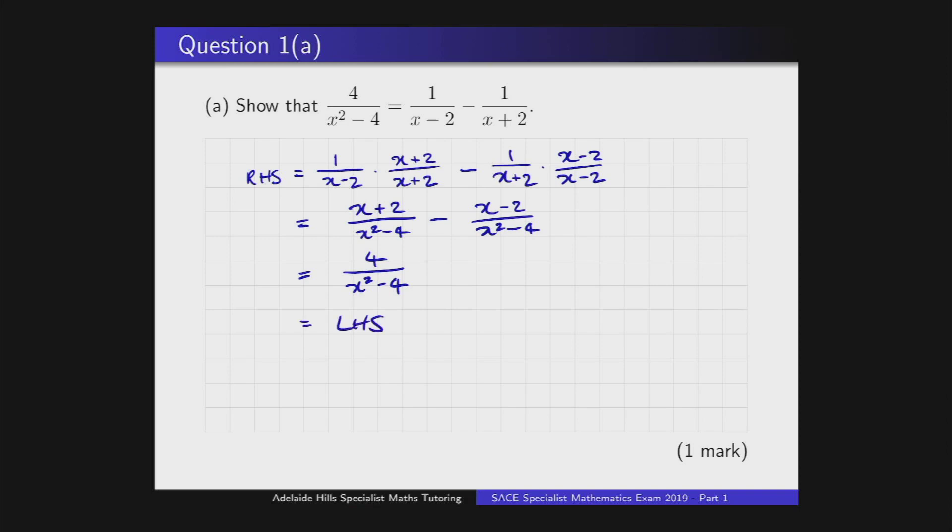So this is what we needed to show, and we can just comment that that's equal to the left-hand side. That's all we need to do to finish that question. We've shown that 4 over x squared minus 4 is equal to 1 over x minus 2 minus 1 over x plus 2.